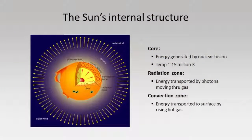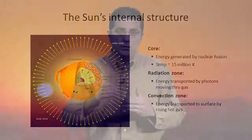Let's take a closer look inside the Sun. The core is where nuclear fusion occurs, at approximately 15 million degrees. That energy then travels outward and passes through a region called the radiation zone, where light travels through the extremely hot, extremely dense gas. As you work outward, the temperature slowly drops, reaching approximately 2 million degrees where a change occurs.